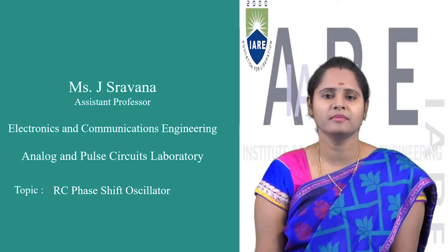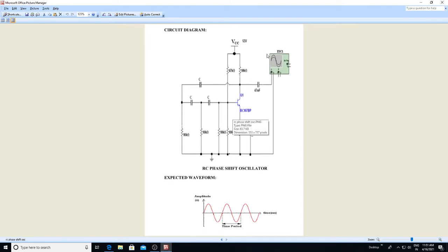Good morning students. Our next experiment is Experiment Number 5: RC Phase Shift Oscillator. This is the circuit diagram of an RC phase shift oscillator, and this is the expected waveform where we need to find out the time period. The aim of the experiment is to find the practical frequency of the RC phase shift oscillator.